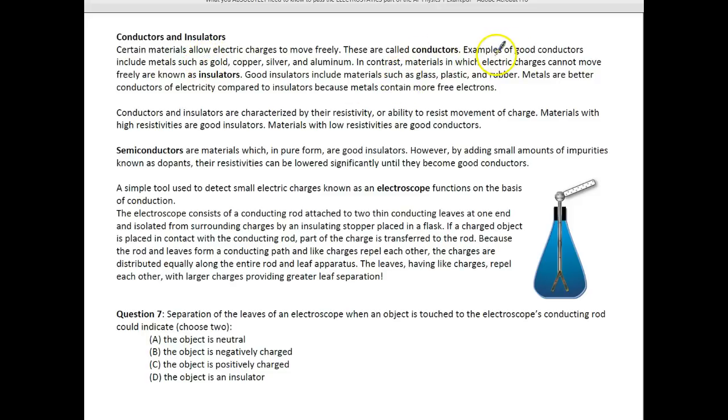Conductors are really good at picking up charge. So gold, copper, silver, and aluminum. You do actually have gold and silver in your iPhone or in your cell phone. And then there are insulators. Good insulators would be like glass, plastic, and rubber. And these are things that do not conduct electricity very well. So they are usually characterized by their resistivity or ability to resist the movement of charge.